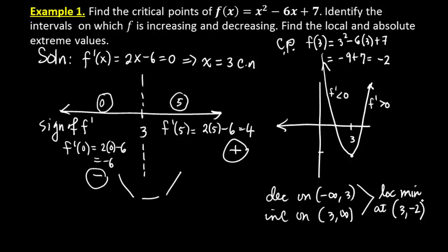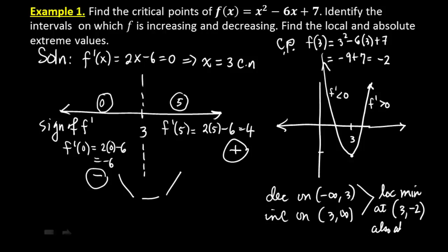Looking at the big picture, the domain is the whole real line, so the local min is also the absolute minimum. Are we going to find an absolute max? No, unfortunately not, because we don't have a closed interval. Since the domain is the whole real line, the graph continues on to positive infinity, so there is no absolute maximum. The local min at (3, -2) is also the absolute minimum.